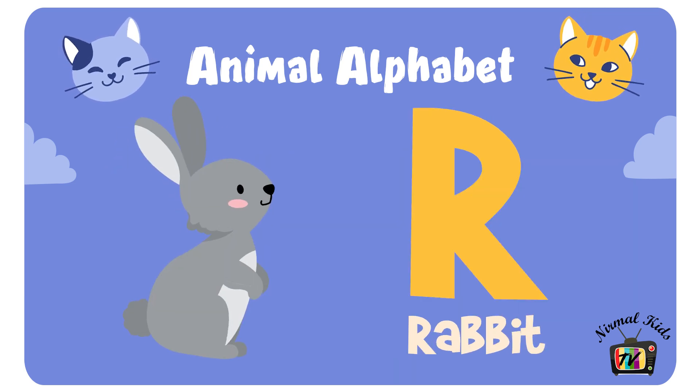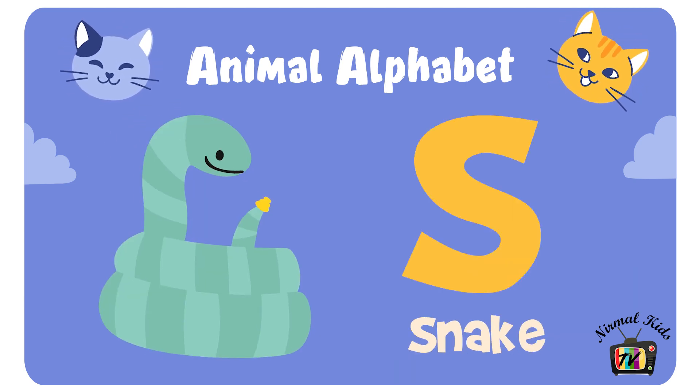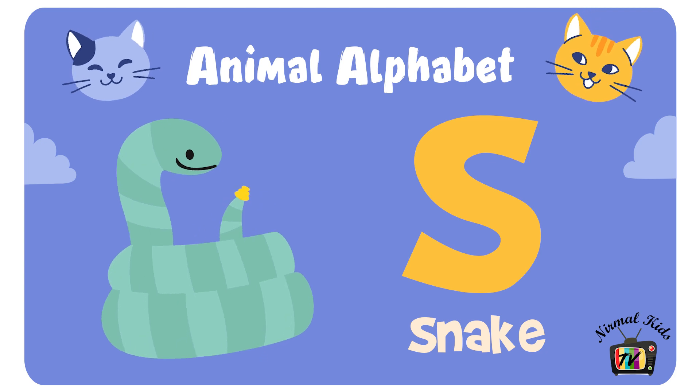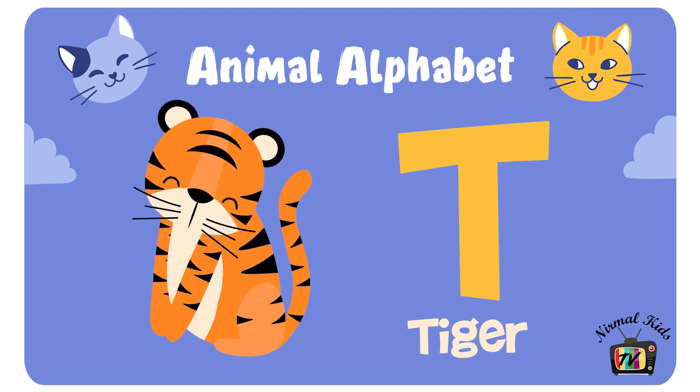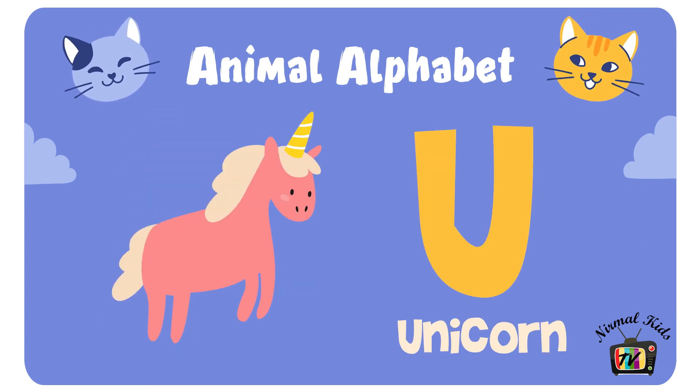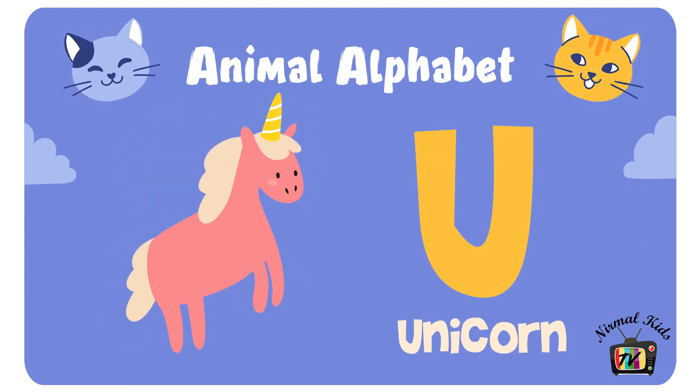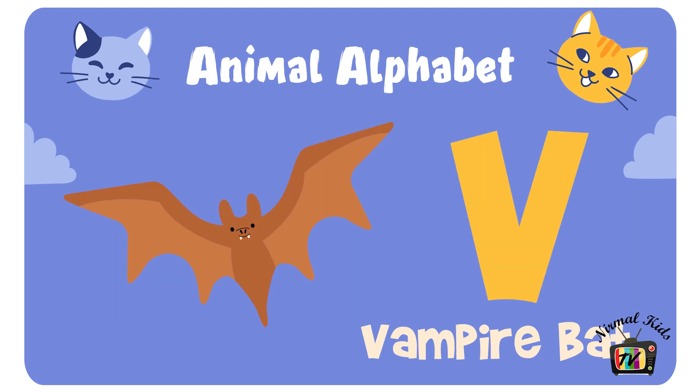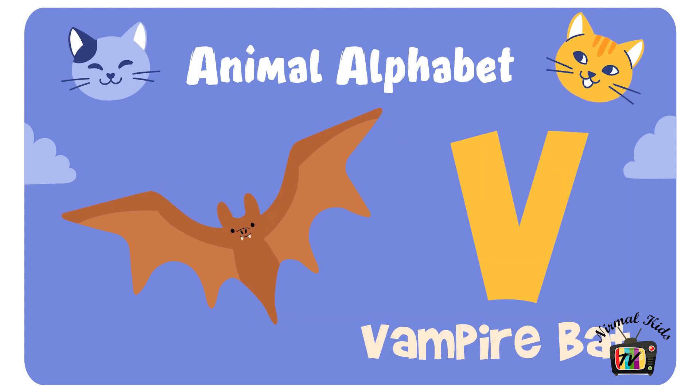R for Rabbit. S for Snake. T for Tiger. U for Unicorn. V for Vampire Bat.